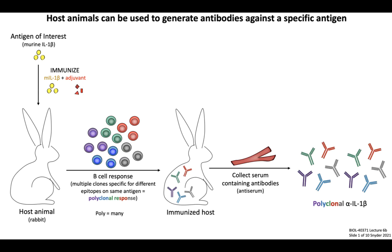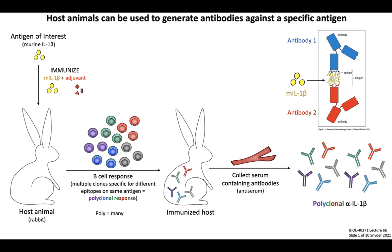Since the serum contains antibodies, this is commonly referred to as anti-serum. Again, this is a polyclonal mixture of antibodies, all of which recognize murine IL-1-beta, but do so by binding to different epitopes on the same antigen. This diagram from the textbook shows how one antibody clone in blue binds to blue epitope residues present at the top of the molecule, while one antibody clone in red binds to red epitope residues at the bottom of the molecule. Therefore, polyclonal antibodies share the same overall specificity for an antigen, but they do this by recognizing different epitopes on the surface of the antigen.